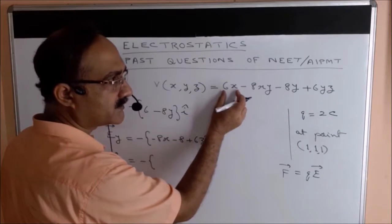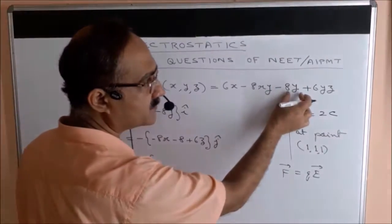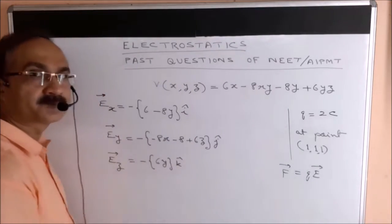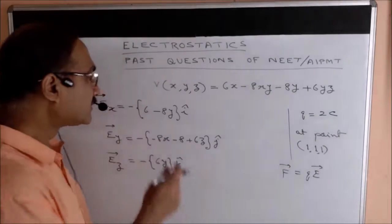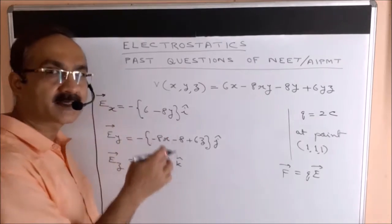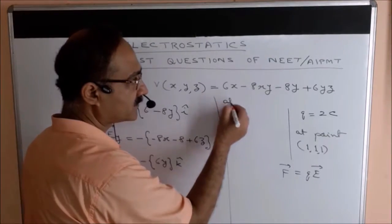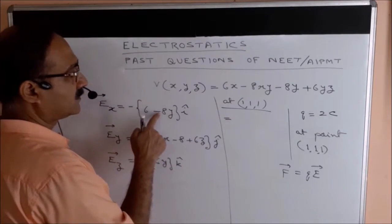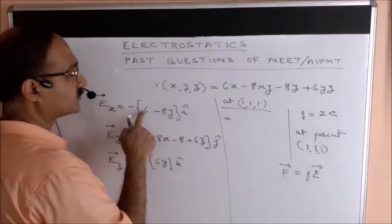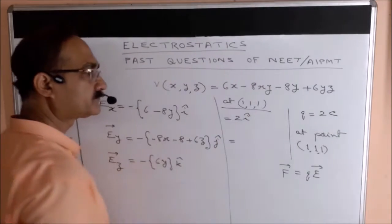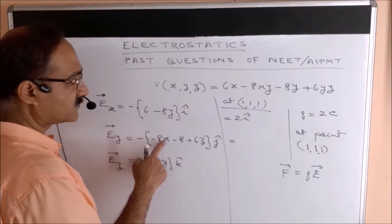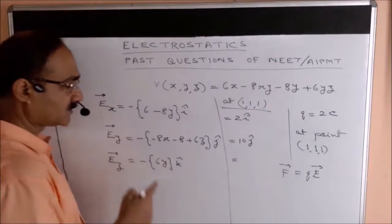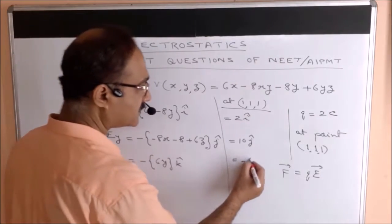For the z-component, Ez = −∂V/∂z. Differentiating with respect to z: the first few terms have no z so they become 0, and only the last term contributes, giving +6y. So Ez = −6y, written with k̂. This gives the general expression for the electric field components at (x, y, z). Substituting x = y = z = 1: Ex = −8 + (−2) ... giving +2î; Ey = −16 + 6 = −10, giving −10ĵ... wait, that is +10ĵ after sign; Ez = −6k̂.